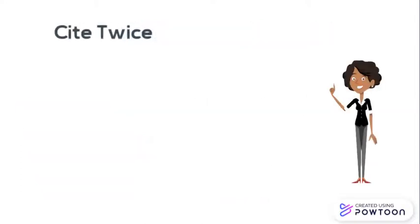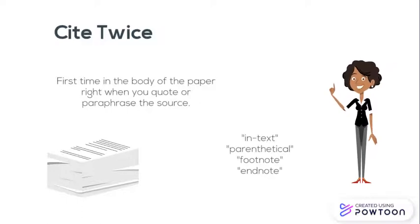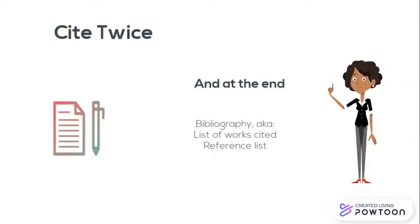Now, no matter what style you use, be aware that you'll be citing twice. First, a brief reference or number in the text of your paper right when you quote or paraphrase your source. This is referred to as an in-text citation, parenthetical, footnote, or endnote. You'll also provide a complete citation at the end of your paper in your bibliography, list of works cited, or reference list.